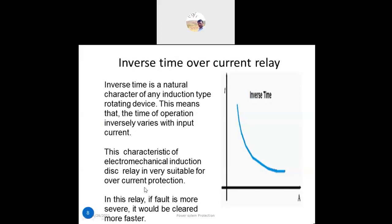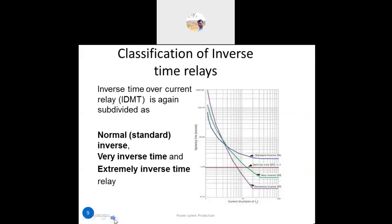There are further classifications within inverse time relays. The inverse definite minimum time (IDMT) overcurrent relay is one type, which can be divided into: normal inverse time, very inverse time, and extremely inverse time relay.